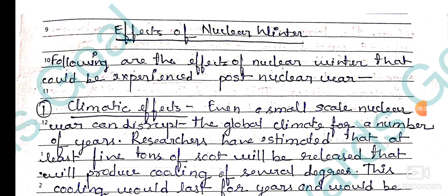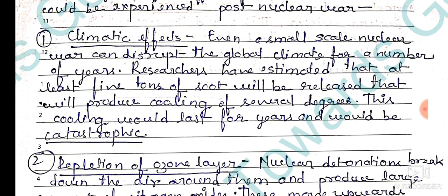Next are the effects of nuclear winter. Following are the effects that could be experienced post nuclear war. The first is climatic effect. Even a small-scale nuclear war can disrupt the global climate for a number of years. Researchers have estimated that at least five tons of soot — soot is the powder-like material produced from burning of any substance — will be released, producing cooling of several degrees. This cooling would last four years and would be catastrophic.